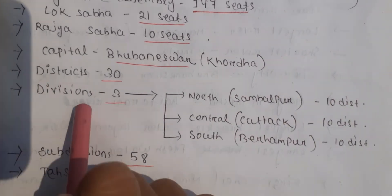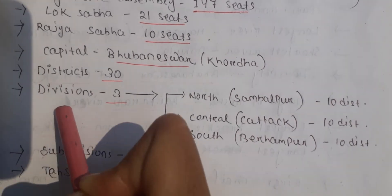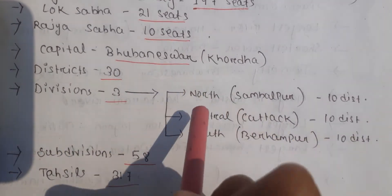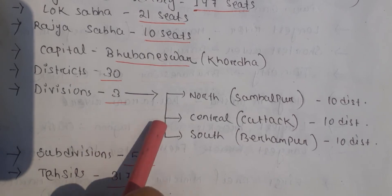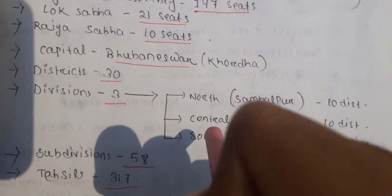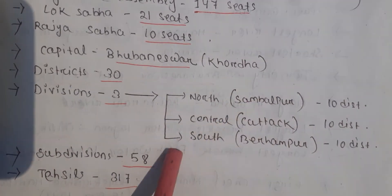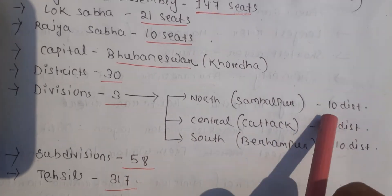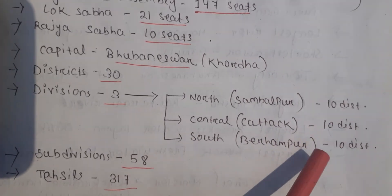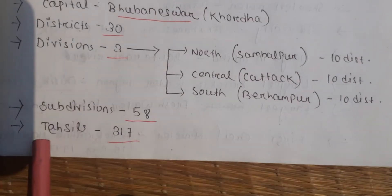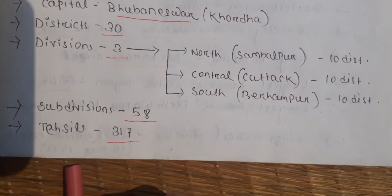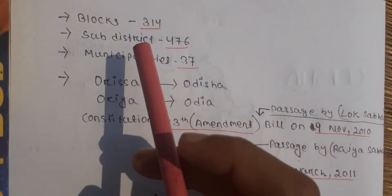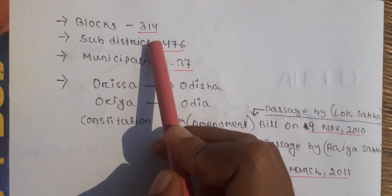Odisha state has 3 administrative divisions: North Division with headquarters at Sambalpur, Central Division with headquarters at Cuttack, and South Division with headquarters at Berhampur. Each division has 10 districts. Odisha also has 58 subdivisions, 317 Tahsils, and 314 blocks.